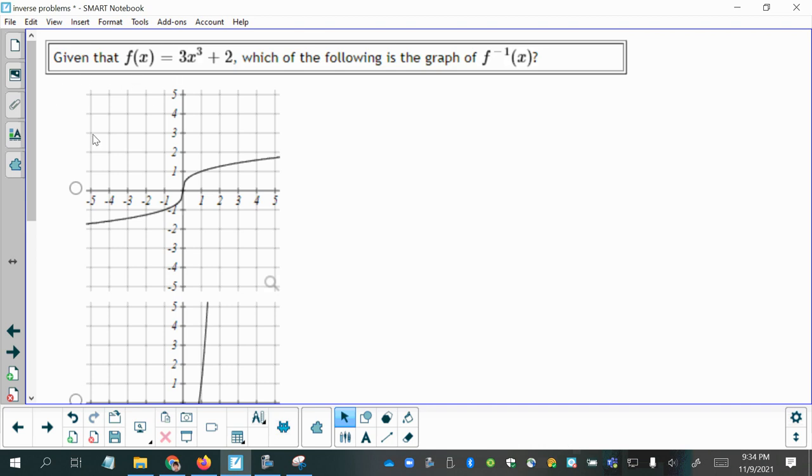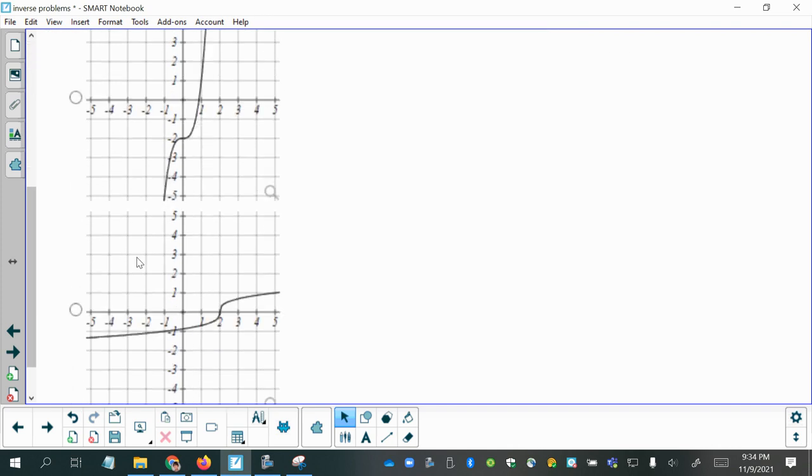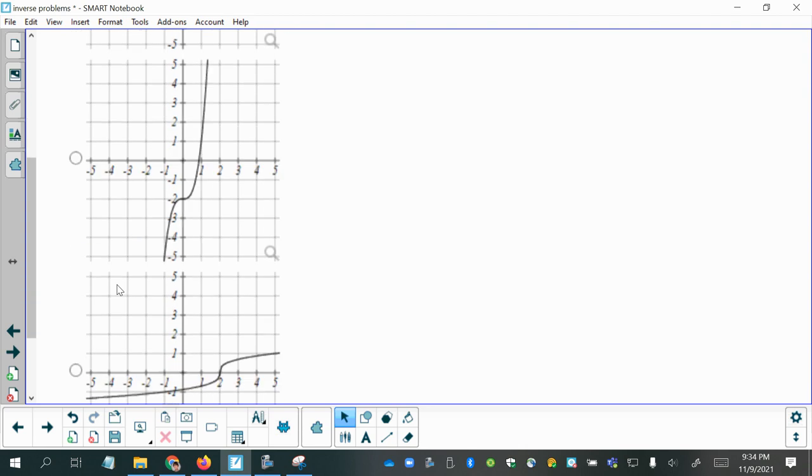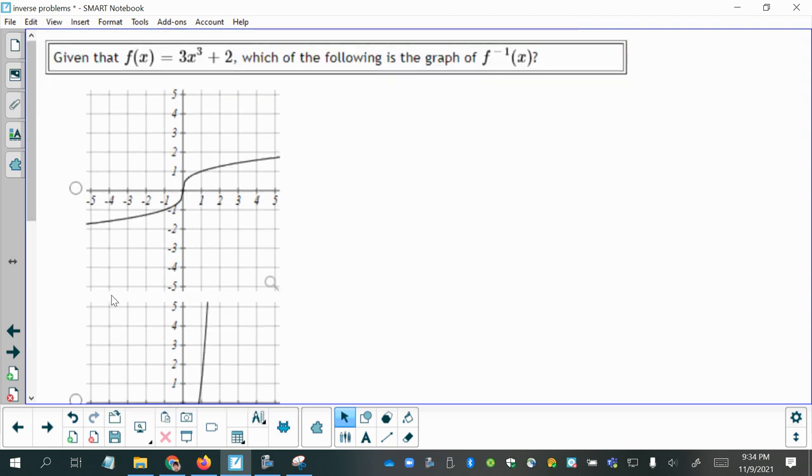Here we've been given the function f of x equals 3 times x cubed plus 2, and asked which of the following is the graph of the inverse of this function. So we've been given all these choices here. So what we need to do is decide which one of those is the inverse function.